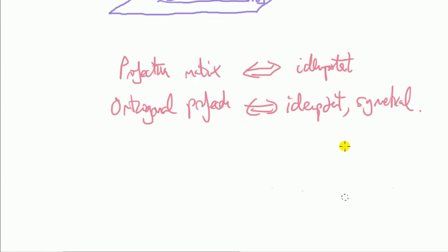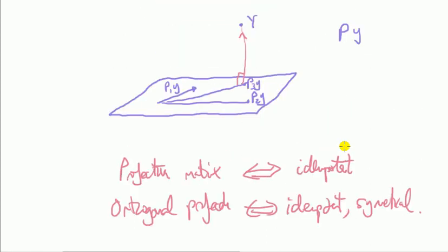Then the second and final question is how come that an orthogonal matrix is symmetrical whereas a just a usual projection matrix is not?